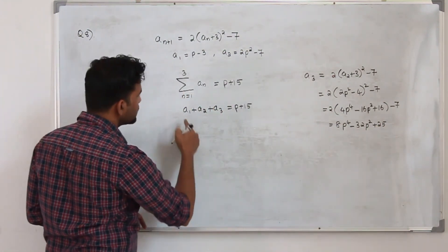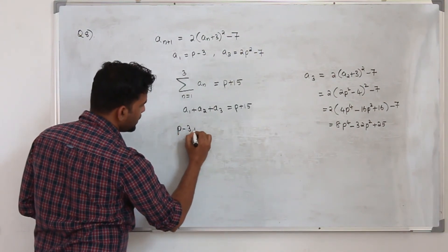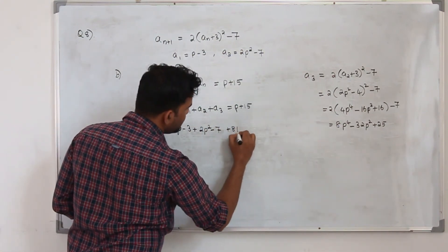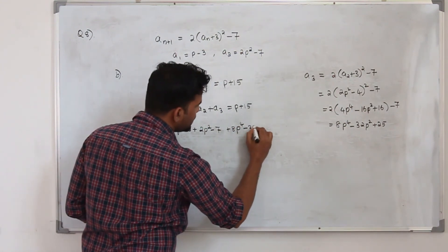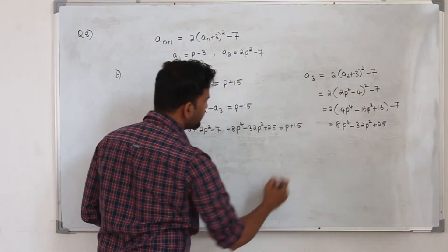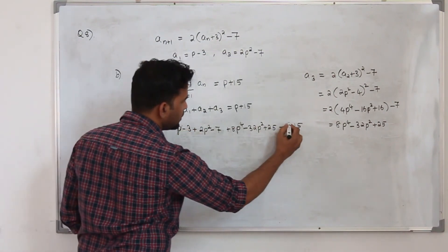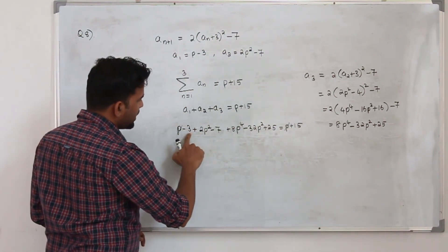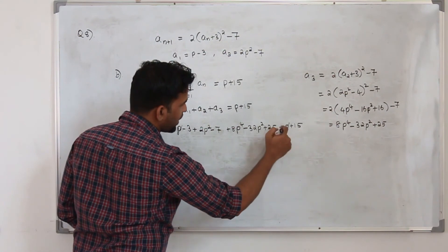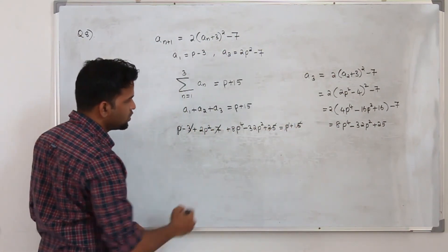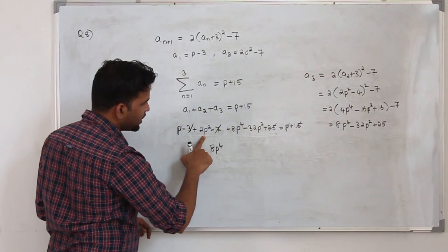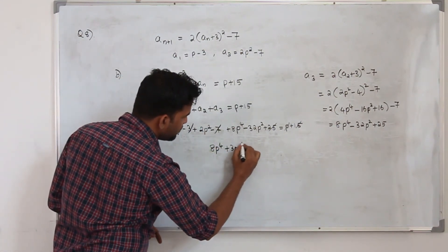So (p − 3) + (2p² − 7) + (8p⁴ − 32p² + 25) = p + 15. The p terms cancel, the constants −3 − 7 + 25 = 15 also cancel against the right side, leaving 8p⁴ − 30p² = 0. Taking p² as a common factor: p²(8p² − 30) = 0.